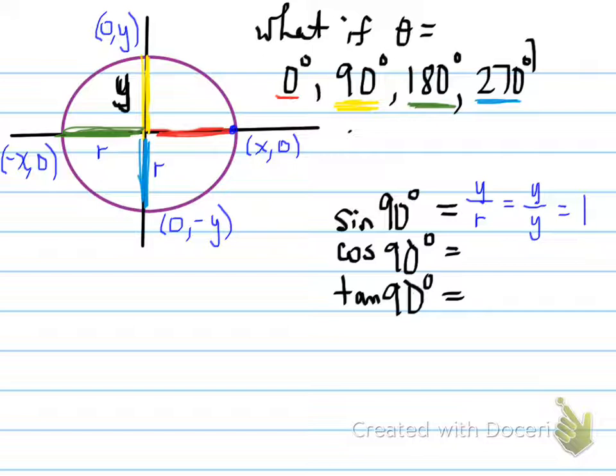Cosine of 90 is equal to x over r. x is 0, r is y, so 0 over y is just 0. Finally, tan of 90. Tan of 90 is y over x, and you find out that when you replace it, it'll be y over 0. Y over 0, as we all know, we can't divide by 0, so the answer is undefined.